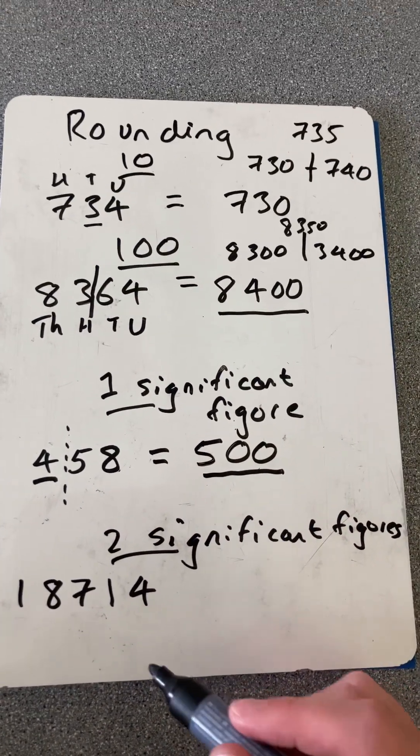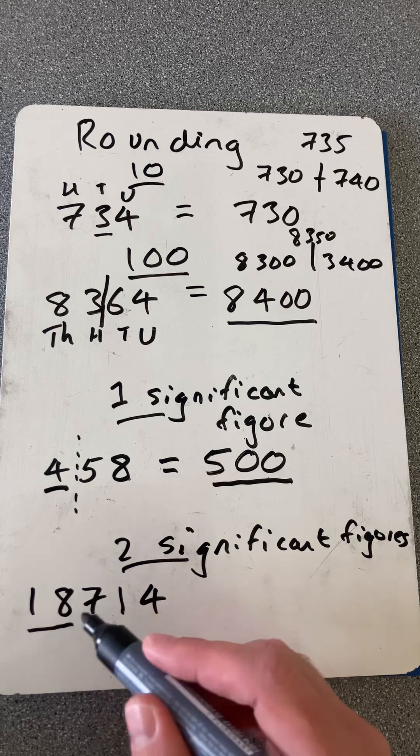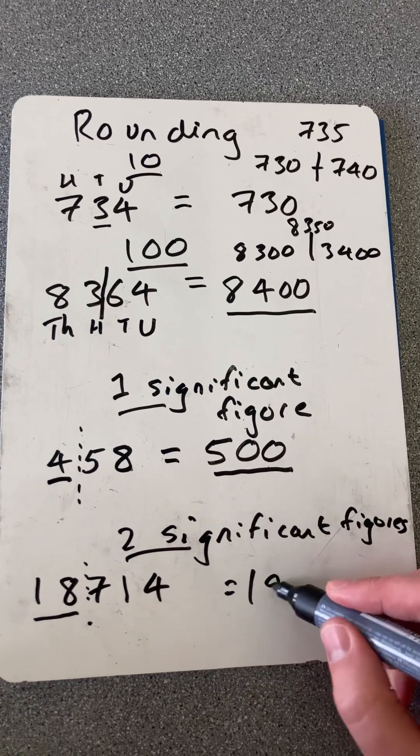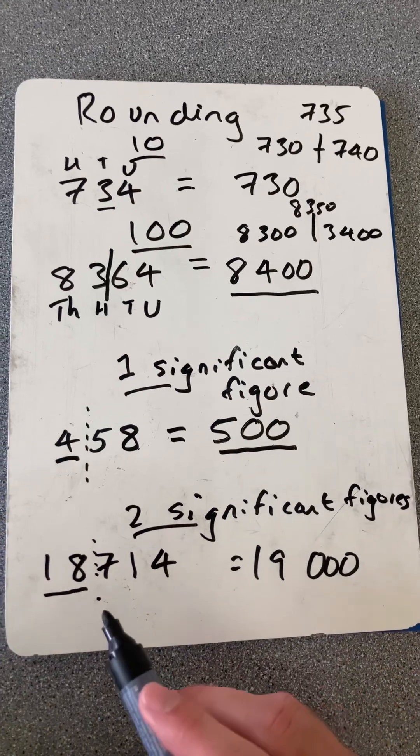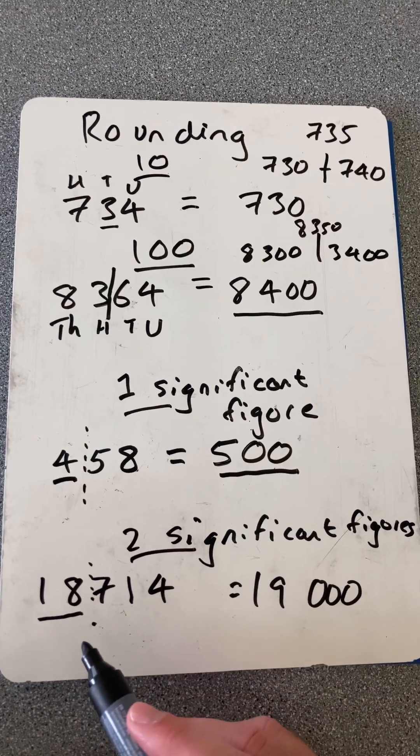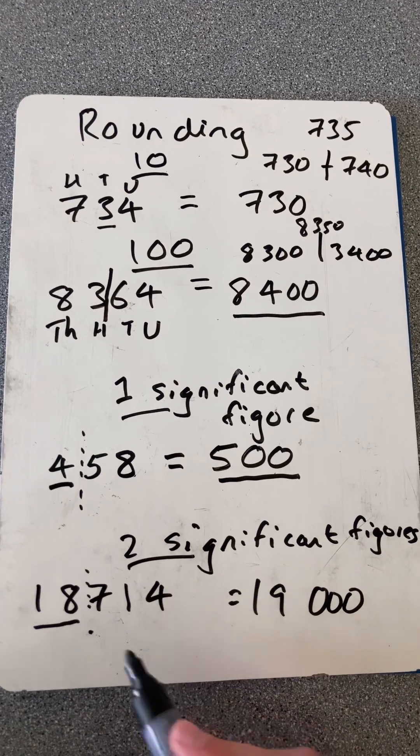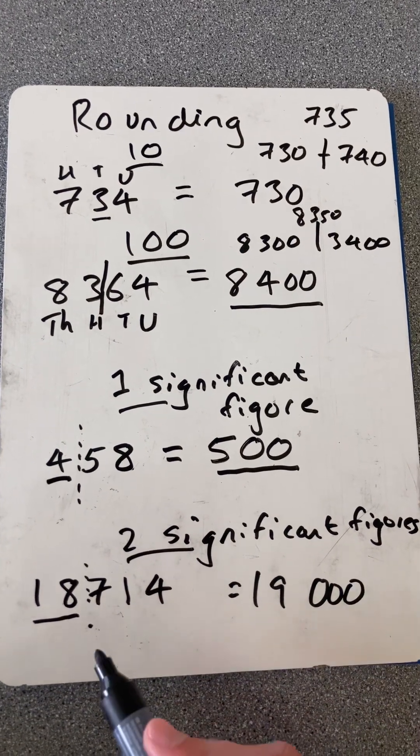So for two significant figures, I see there's 1, 2. I look to the right there, there's a 7. I'll round up and have 19,000. So if I wanted to apply that, say it's the number of people at a football match, I'd say there were about 19,000 people, if that many tickets went.